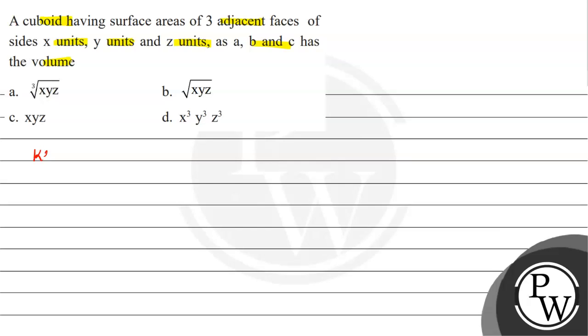We will start the solution here. First of all, let's start with the key concepts. What should we start? Formula of volume of cuboid. So volume of cuboid is length of cuboid multiplied by width of cuboid multiplied by height of cuboid.